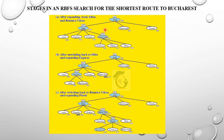For example, using RBFS to reach the goal node target via shortest route: we expand over stages starting from the initial node 0. We expand child nodes and choose the child node with minimum f-value. If the alternative path has a second minimum f-value of 447, we expand that alternative path and choose the node with the 4th minimum f-value.